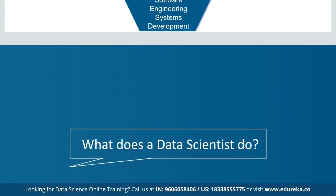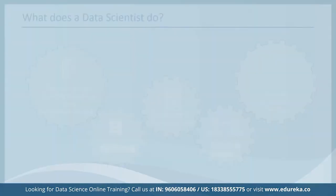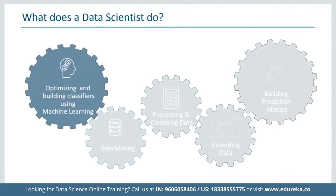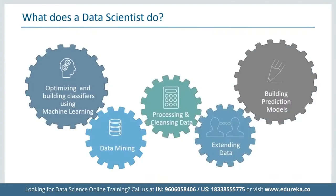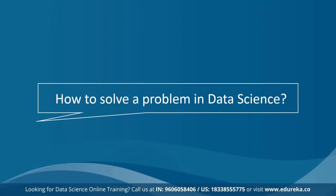What does a data scientist do? A data scientist is responsible for optimizing and building classifiers using machine learning, data mining, processing and cleansing data, extending data, and building prediction models. You will know more about all these roles when we talk about how to solve a problem in data science.